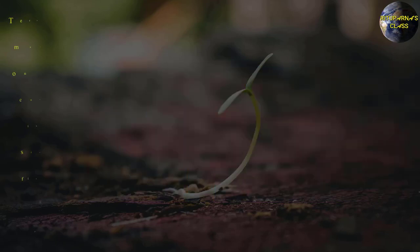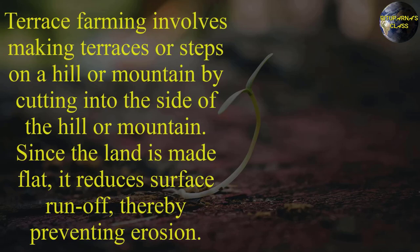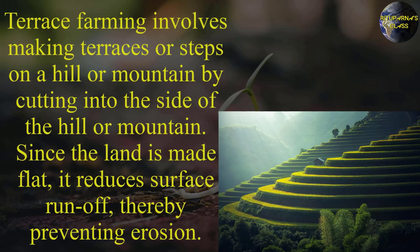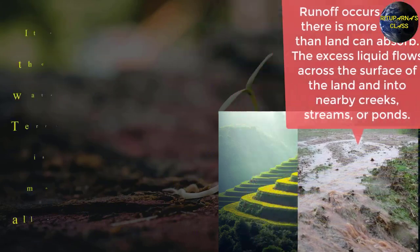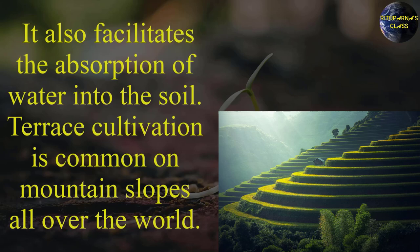Next is terrace farming. Terrace farming involves making terraces or steps on a hill or mountain by cutting into the side of the hill or mountain. Since the land is made flat, it reduces surface runoff, thereby preventing erosion. It also facilitates the absorption of water into the soil. Terrace cultivation is most common on mountain slopes all over the world.